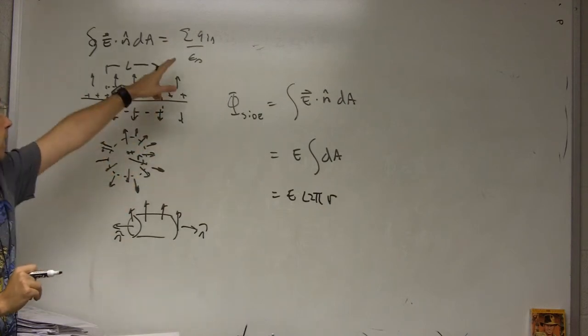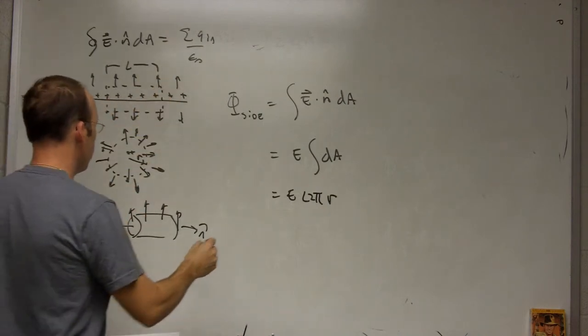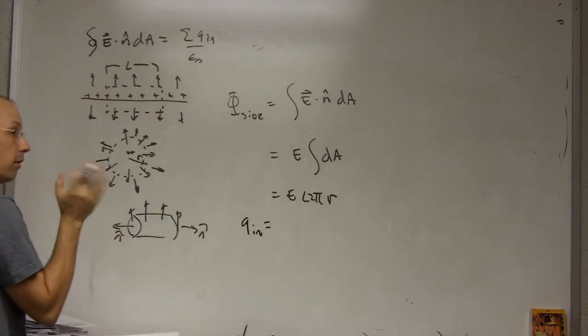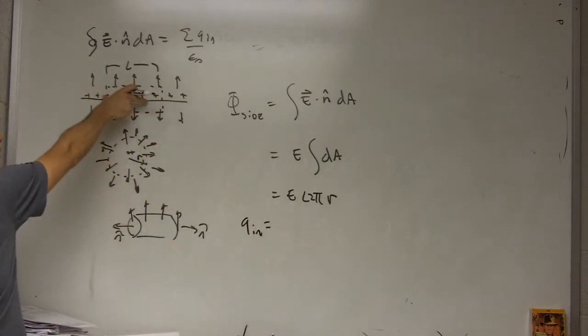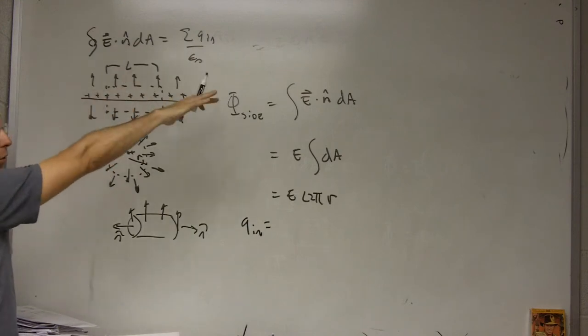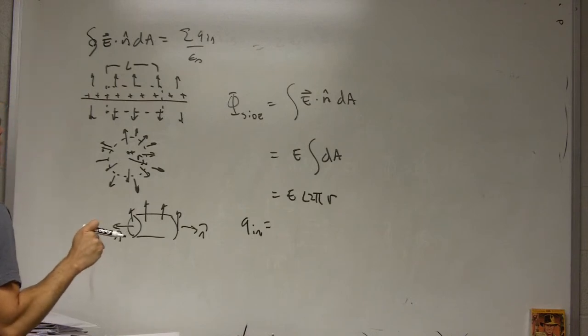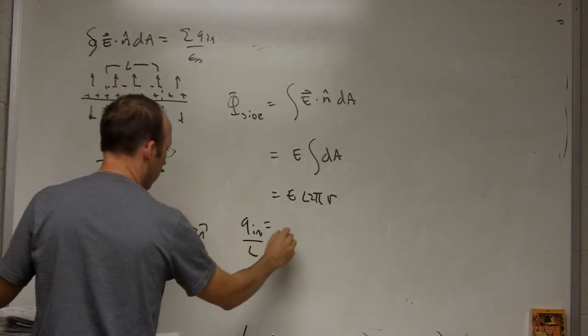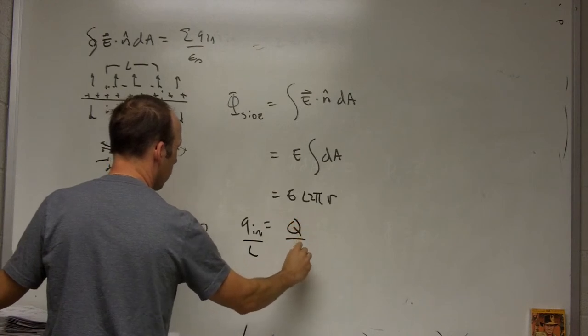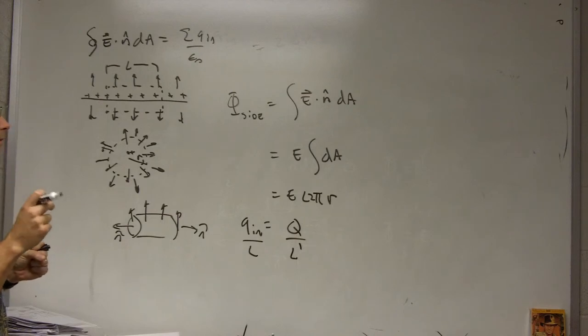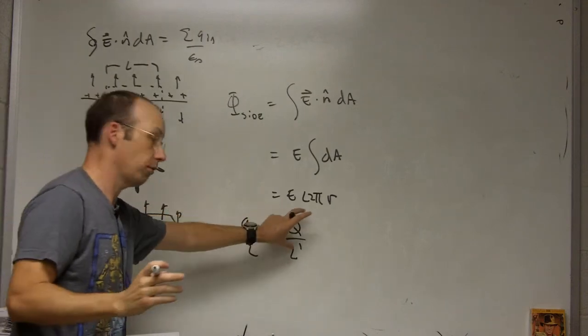Now how much charge is inside? Qn is going to be if I look at the ratio of the charge inside of here to the total length which I'll call l prime. Then if I say Qn over l that would be the total charge Q over the total length l prime. Sometimes problems will give this as the linear charge density, the charge per unit length, which is this whole thing.